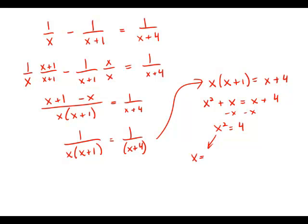x could be positive 2, but also x could be negative 2. We need the plus or minus. We need to consider both possibilities because both 2 and negative 2 squared will give us positive 4.